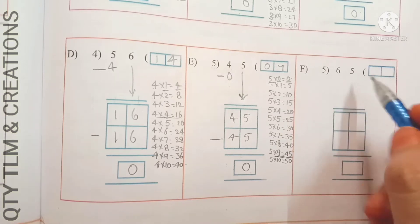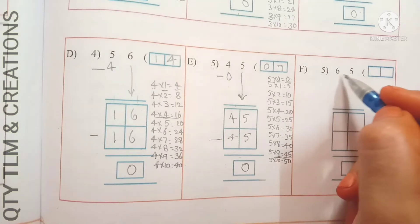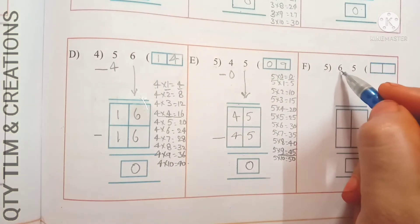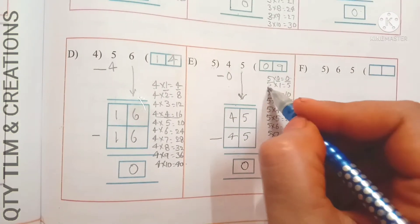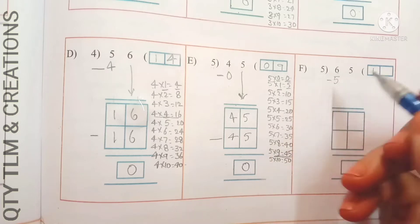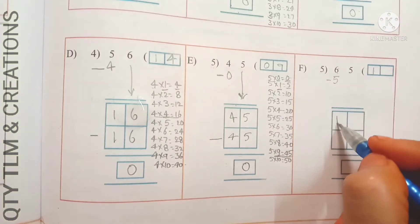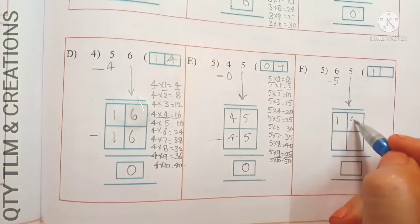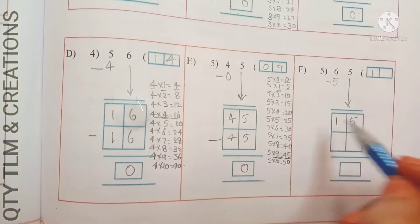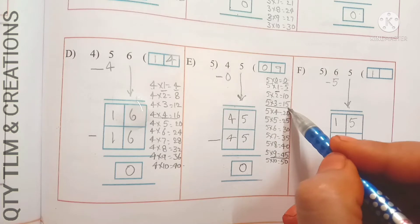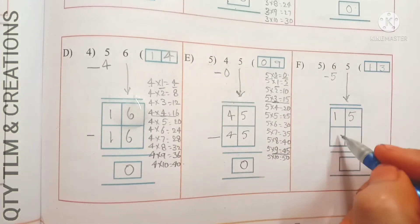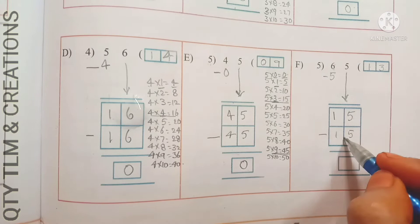Next F: 65 divided by 5. Division starts from the highest place value, which is 6. Observe the 5 times table — 5 ones are 5. Write 1 in the quotient's place and 5 under 6, subtract: we get 1. Bring down 5; it becomes 15. 5 threes are 15, so write 3 in the ones place. Write 15 under 15 and subtract: we get 0.